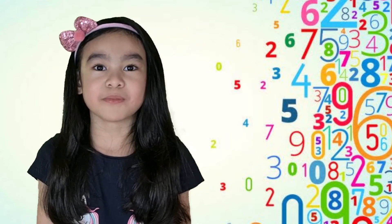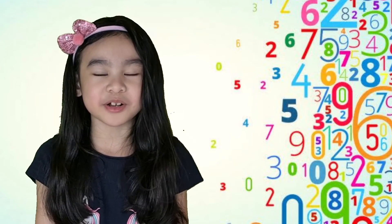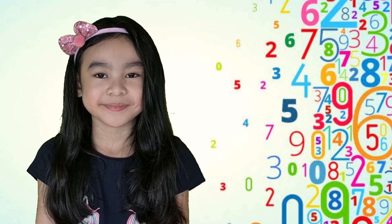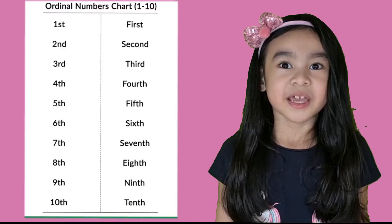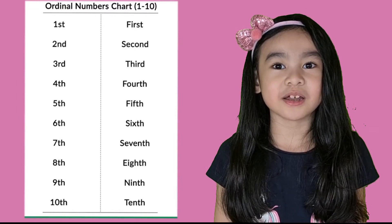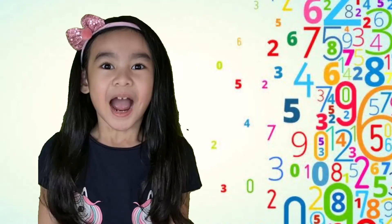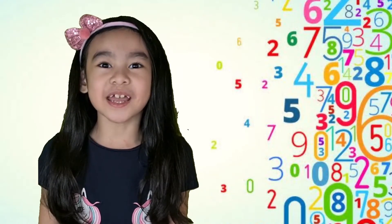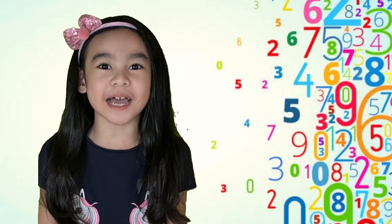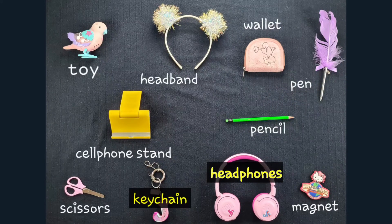We can start from the left or from the right — I will show you examples later. Here is the list of the ordinal names and symbols. I have 10 items here for today's activity: I have headband and scissors.